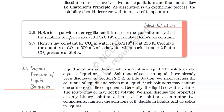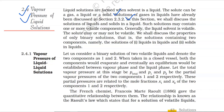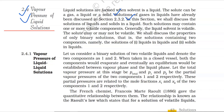2.4 Vapour Pressure of Liquid Solutions. Liquid solutions are formed when the solvent is a liquid. The solute can be a gas, a liquid, or a solid. Solutions of gases in liquids were discussed in section 2.3.2. In this section, we shall discuss solutions of liquids and solids in a liquid. Such solutions may contain one or more volatile components. Generally, the liquid solvent is volatile, and the solute may or may not be volatile. We shall discuss the properties of only binary solutions.